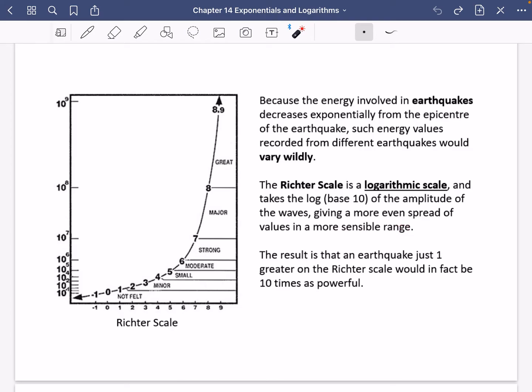So what I'm saying here is this scale that we've got along here is the energy scale. And you'll see here that between 8 and 9 is a great earthquake that we've got here, whereas just between 10 to the power of 4 and 10 to the power of 5 is what we would call a small one. So this is the true energy scale that we've got along the side. And when we take the log base 10 of all of these, we then get the normal Richter scale, which is a linear scale. Logarithmic, linear. So what we get here, the result is an earthquake just one greater on the Richter scale would in fact be 10 times as powerful.